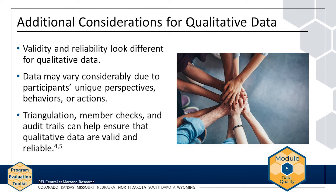Instead, investigate any data that are very different from other related data. Consider using triangulation to support the validity and reliability of your qualitative data. Triangulation involves reviewing multiple sources of data to look for similarities and differences. Do the results from multiple data sources point in the same direction? Do the results make sense in the context of your evaluation? If the answer to either of these questions is no, you might consider completing another technique for ensuring validity and reliability for qualitative data.